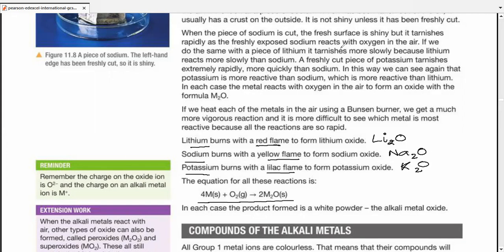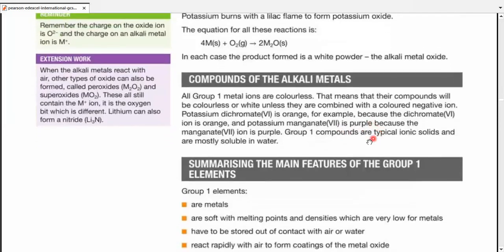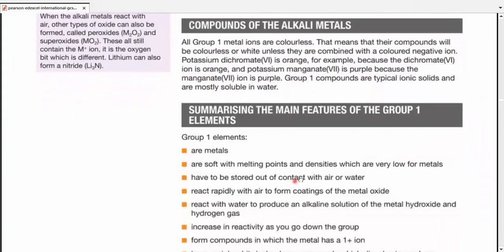Let's discuss the compounds of alkali metals. All Group 1 metal ions are colorless. That means their compounds will be colorless or white until they're combined with a colored negative ion. Potassium dichromate is orange because dichromate ion is orange. Potassium manganate is purple because the manganate ion is purple. Potassium, however, is still colorless in its ions.